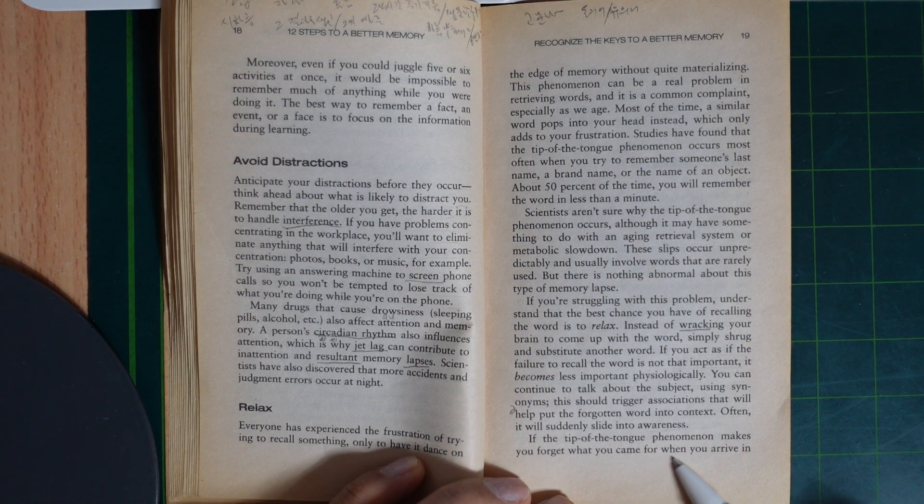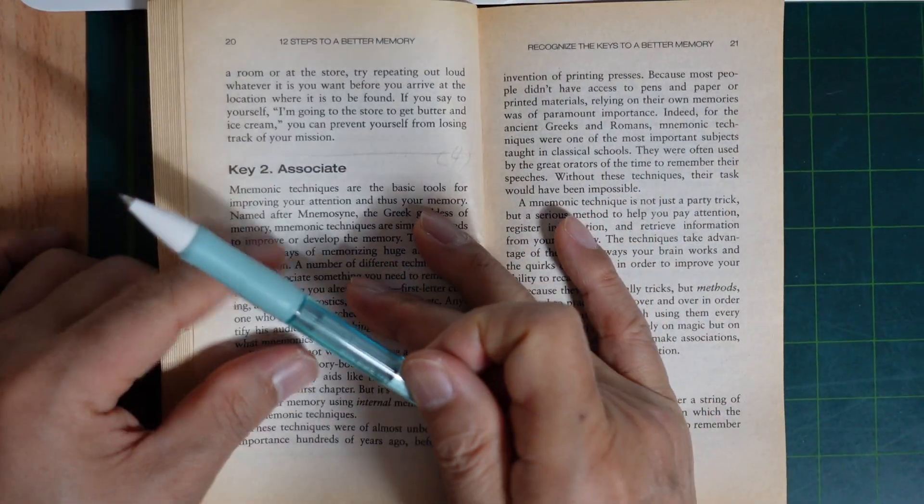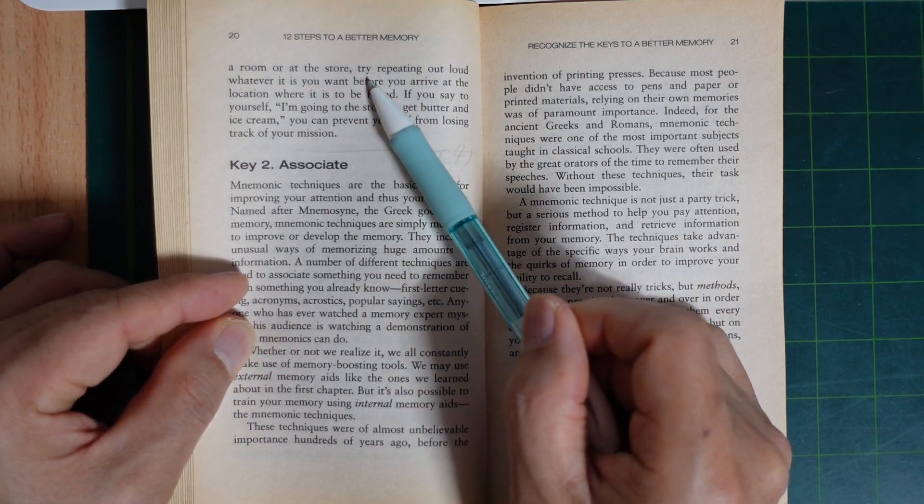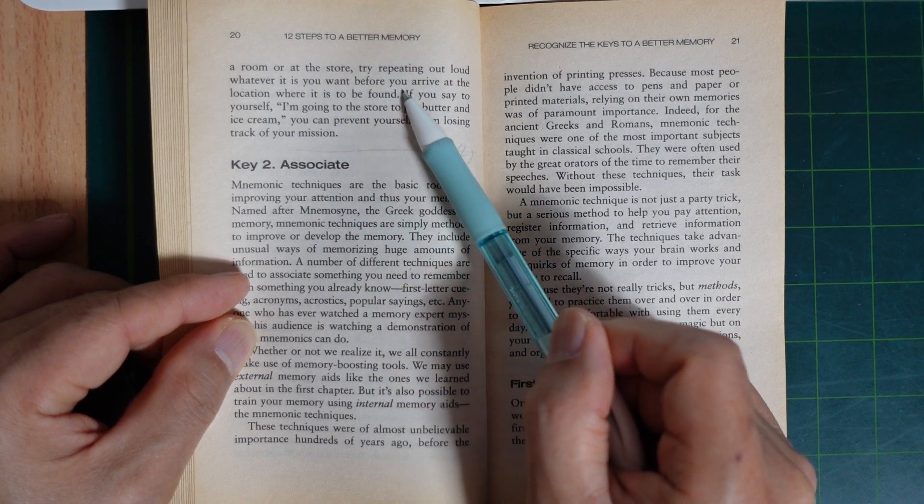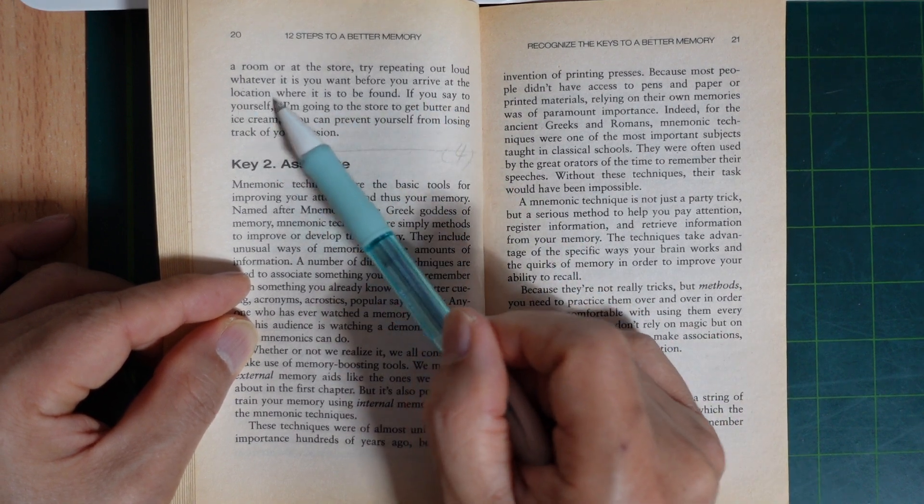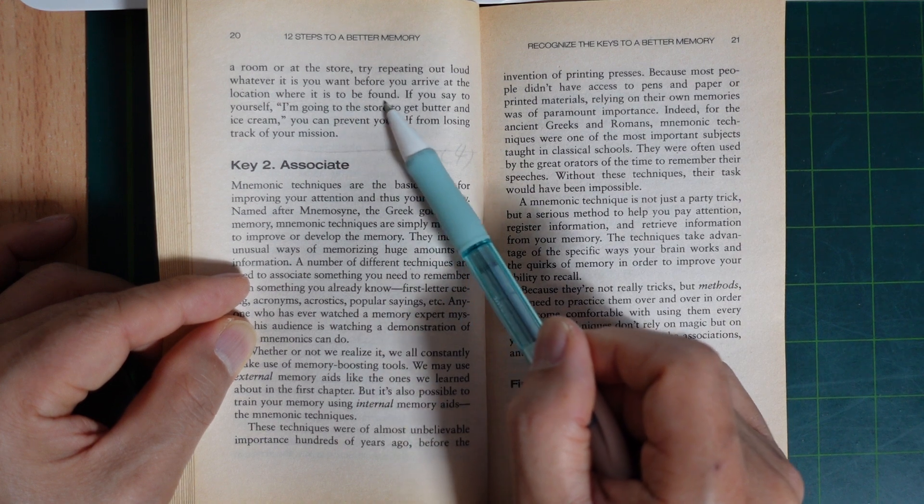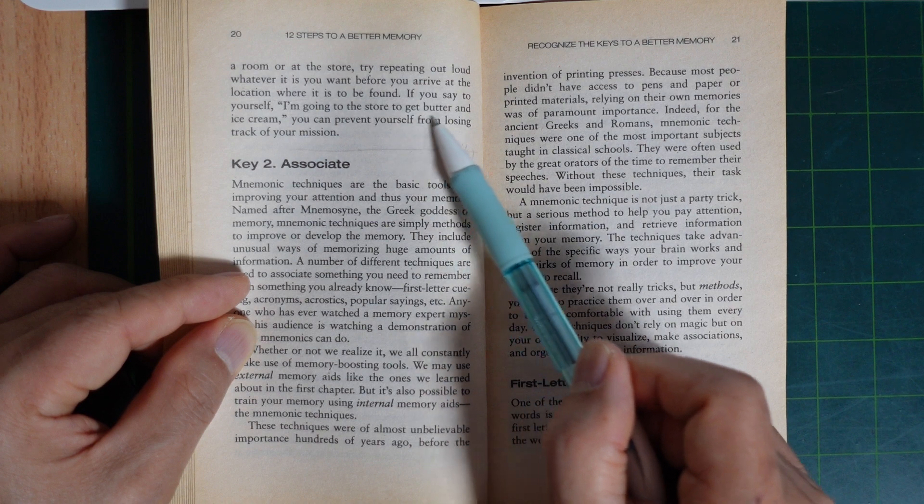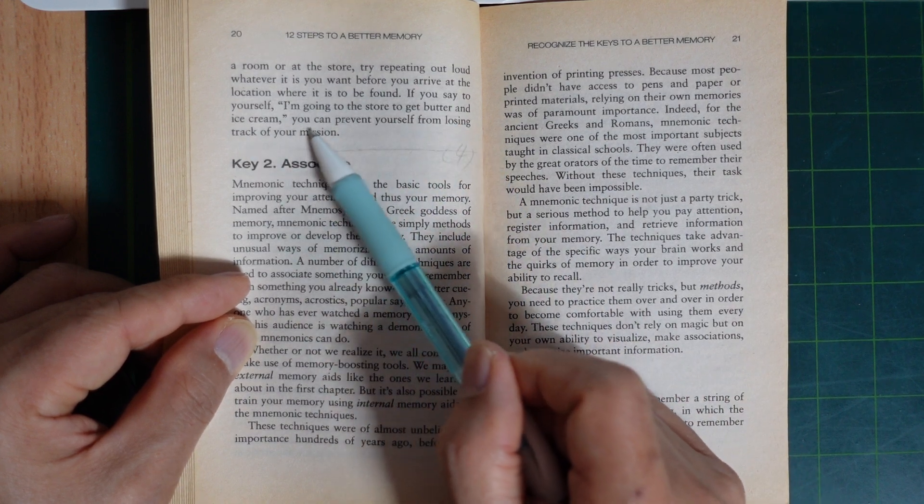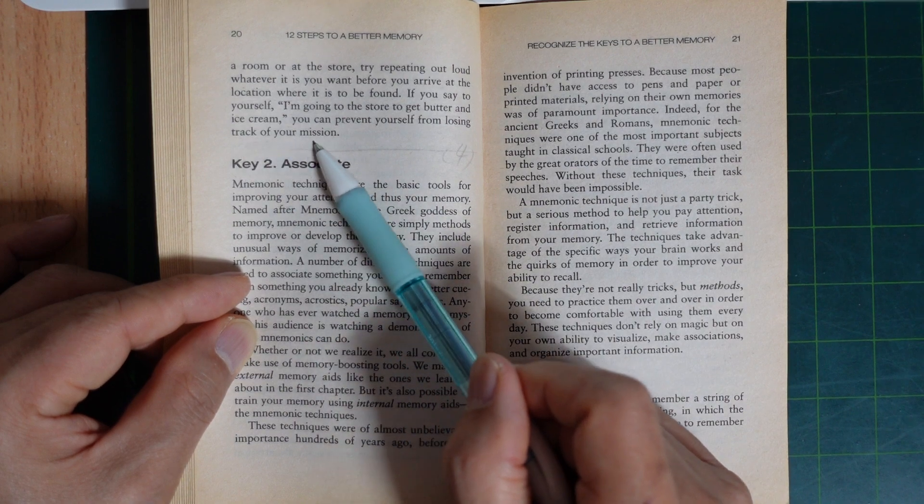If the tip of the tongue phenomenon makes you forget what you came for when you arrive in a room or a store, try repeating out loud whatever it is you want before you arrive at the location where it is to be found. If you say to yourself, 'I'm going to the store to get water and ice cream,' you can prevent yourself from losing track of your mission.